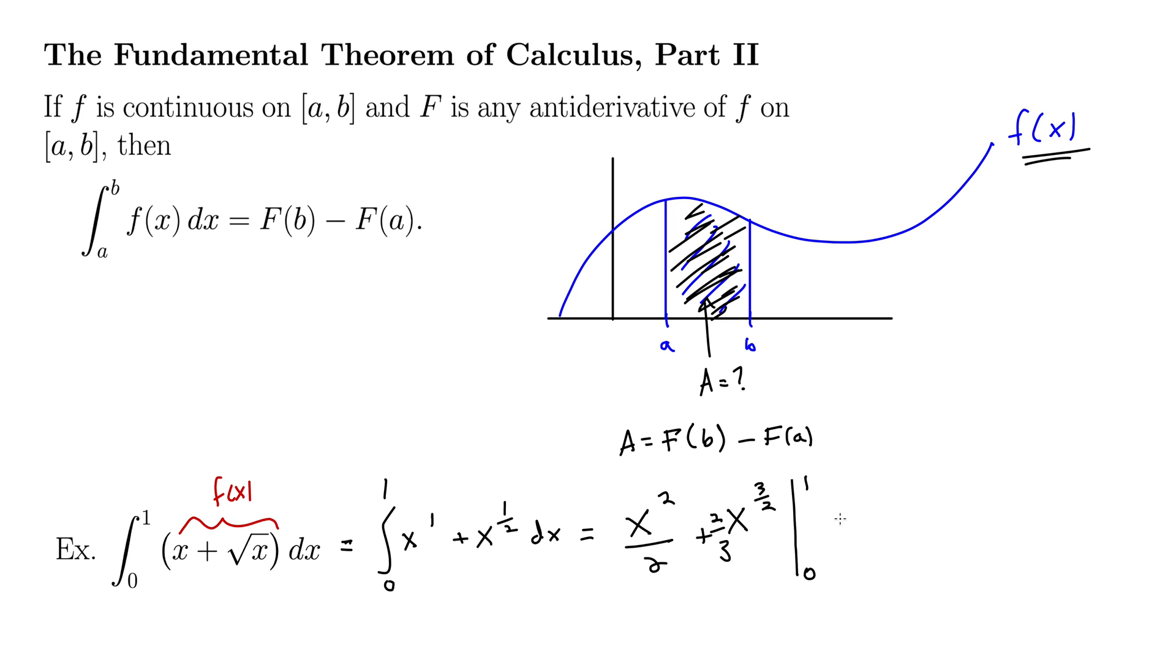Okay, so plugging in 1 gives, let's see, 1 half plus 2 thirds. These are nice numbers to work with. Minus, parentheses, we plug in 0. Well, that's all just going to be 0.